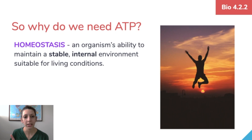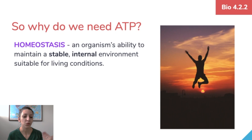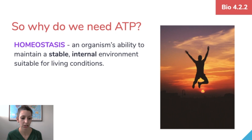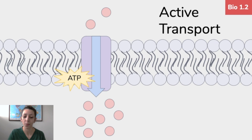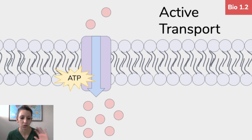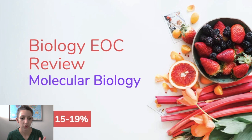Why do we need ATP? ATP is energy, and it's really all about homeostasis — an organism's ability to maintain a stable internal environment suitable for living conditions. ATP provides energy not only at the macro level for the full organism, but also for cell transport, where we need ATP to move molecules in and out of the cell. As discussed in our first video, active transport uses ATP, as do many other reactions within the cell.